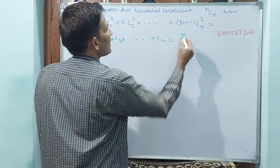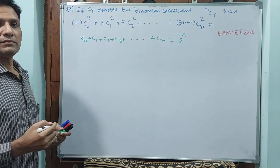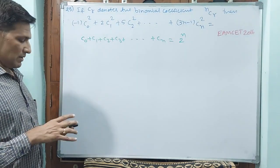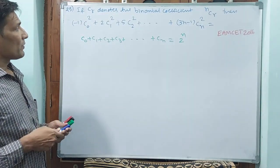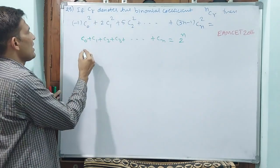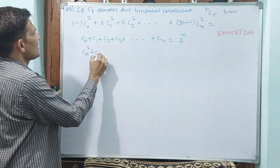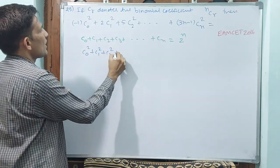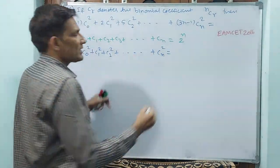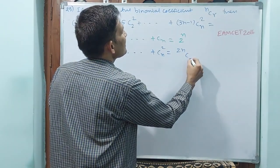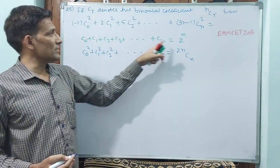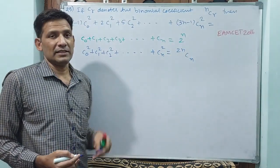Before proceeding further, what is this value? We will write once again: C0 plus C1 plus C2 plus C3 plus up to Cn. What is this value? This value is 2 power N. Now, if instead of single terms we have squares — C0 squared, C1 squared, C2 squared, Cn squared — then how can you write this? That is 2N_Cn. Both are different: this is 2 power N, but this is 2N_Cn.